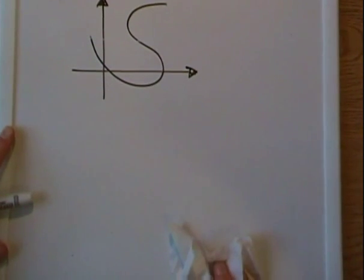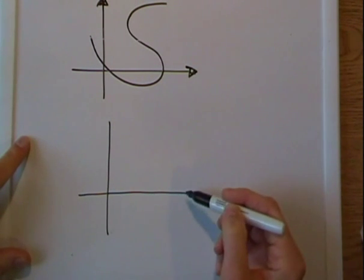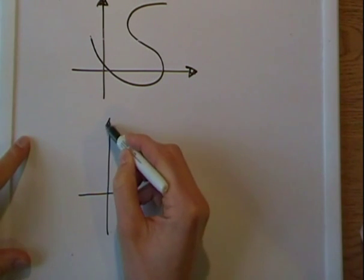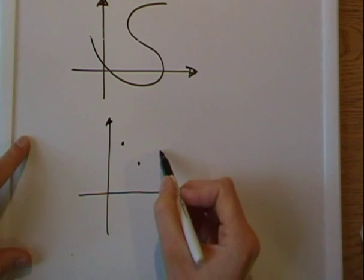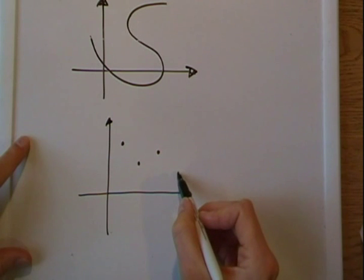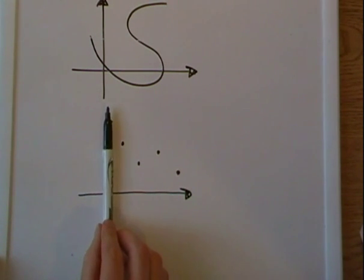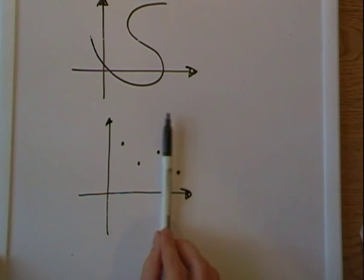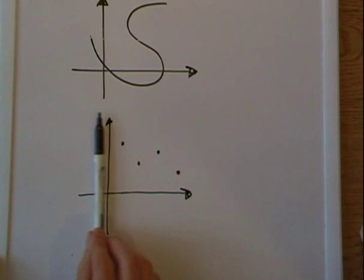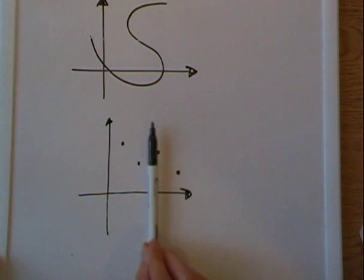We could also have a set of just scattered points on a graph, and they ask us to determine whether this is a function. So we go ahead and move our pen from the left to the right, and we see that at no point does my pen pass through two points at the same time.